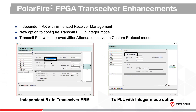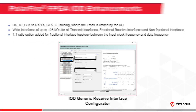For PolarFire FPGA transceiver enhancements, Libero version 12.4 adds independent RX support with enhanced receiver management. This release also supports integer mode for TXPLL, as well as improved jitter attenuation solver in custom protocol mode.